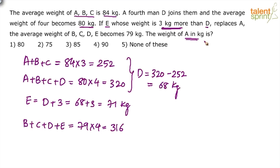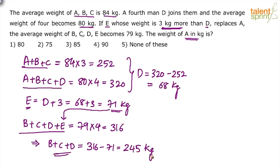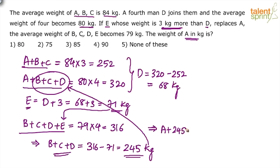We need to find the weight of A. We have equations for A plus B plus C, A plus B plus C plus D, and B plus C plus D plus E. Since we know E is 71 kg, substitute that to get B plus C plus D equals 316 minus 71, which is 245. Now substitute into A plus B plus C plus D equals 320: A plus 245 equals 320, so A equals 320 minus 245, which is 75 kg. The correct answer is option 2, 75 kg.